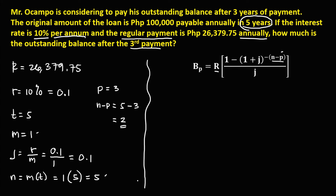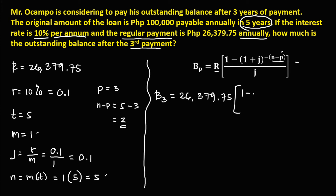To solve the problem using this formula, we substitute all the values. The balance after the 3rd payment equals the regular payment R, which is 26,379.75, times 1 minus (1 plus the interest per period, 0.1) to the power of negative N minus P, which is negative 2, divided by J, which is 0.1.